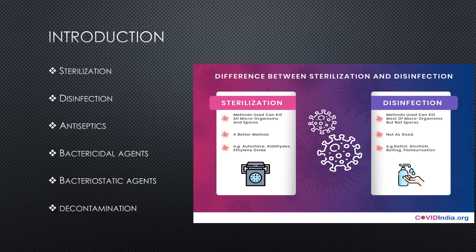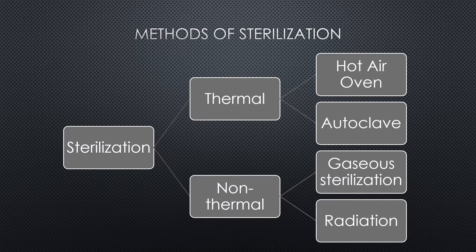Sterilization is classified depending upon the methods used. The classification includes thermal and non-thermal methods. If temperature is involved, these are called thermal methods, which include use of hot air oven and autoclave. Methods not involving temperature are called non-thermal, which include gaseous sterilization and radiation sterilization.